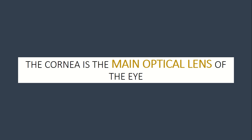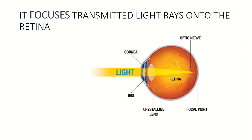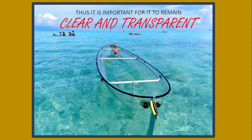As we know, the cornea is the main optical lens of the eye. It focuses transmitted light rays onto the retina. Thus, it is important for it to remain clear and transparent.